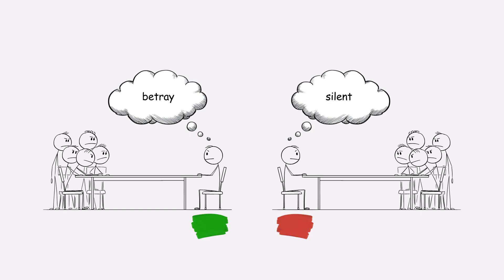If one betrays while the other stays silent, the traitor goes free and the silent one gets a heavy sentence. However, if both betray, both get sentenced.